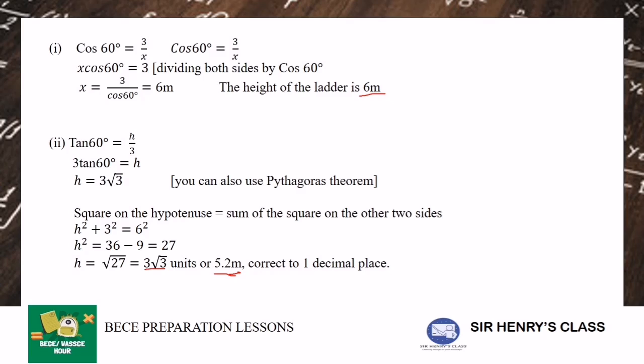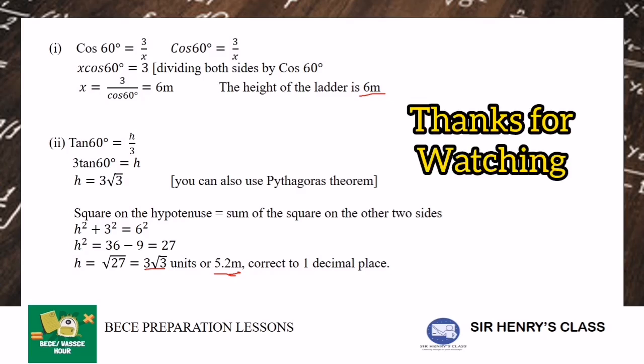So we choose x to be the length of the ladder, which is this, the x. And the height, which is the h. So you try your hands on this one too. And when you are done, your solution is here. So your height is 6m. And h is 3 root 3. Putting on the calculator to 1 decimal place is 5.2 meters.